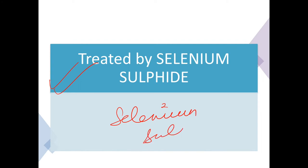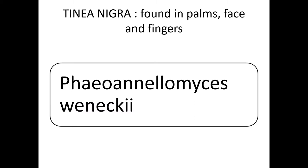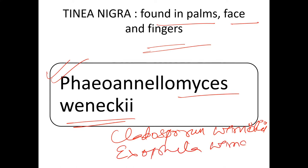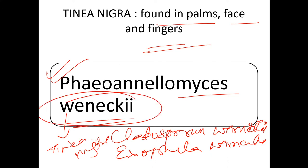Tinea versicolor is treated by selenium sulfide. Next, tinea nigra — it is found on palms, face, and fingers. It is caused by Phaeannellomyces werneckii, also caused by Cladosporium. To remember: whenever 'werneckii' is involved, you know it is tinea nigra.